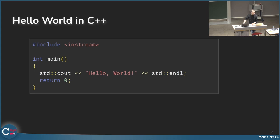There is a difference between std::endl and backslash n. If you use std::endl, it also flushes the output buffer. If you just use backslash n and your program crashes, it's not necessarily the case that the output is printed to the terminal. However, if you use std::endl, the output gets flushed and actually printed, so if your program crashes afterward you still see it.